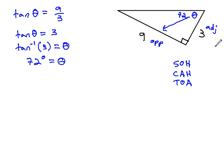That's a 72 degree angle up there. Now we know two sides and two angles. We know the sides are 9 and 3. We know the two angles, the right angle and the 72 we found. The last few pieces fall into place quite quickly.